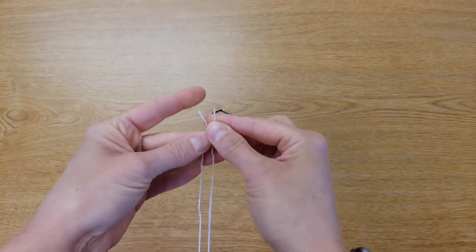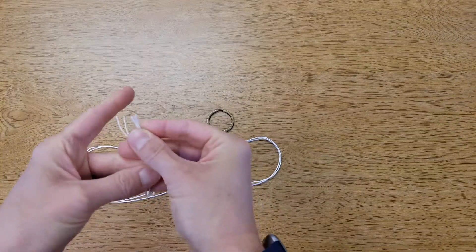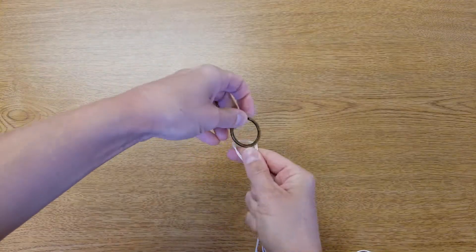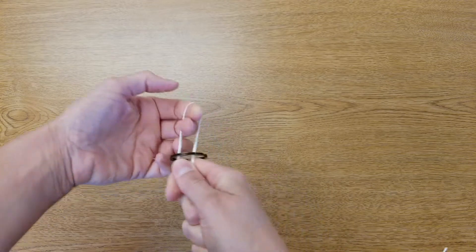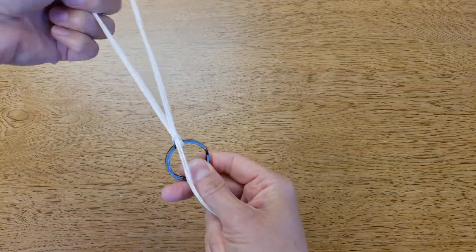Take two of the cords that you cut and match up all of the ends so they're all pinched together and you're creating a long smooth loop. Pull the loop through your keyring and then feed the ends through the loop. You'll tighten it and then the cords will be attached to your keyring.